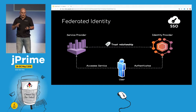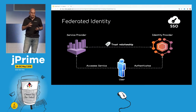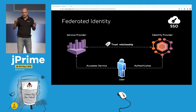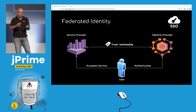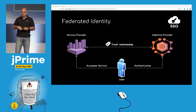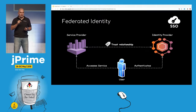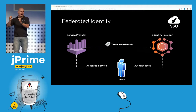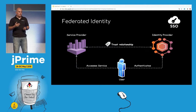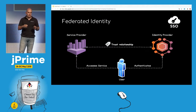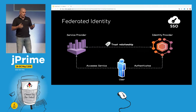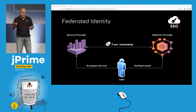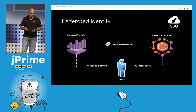The whole identity of all users stays at the customer's premises — in the so-called identity provider. In this scenario, the user never gives credentials directly to the services, but is sent to the identity provider, identifies there, and because there is an established trust relationship between the identity provider and the service provider, the service provider accepts this identity as valid.